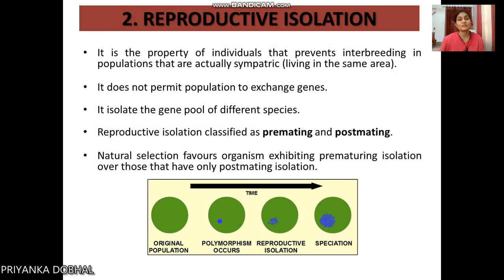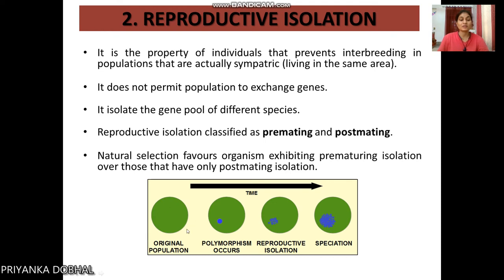Now let's talk about reproductive isolation. Here, individuals that are different within a population do not exchange genes, and their gene pool also becomes different. In the diagram, we are showing the original population in green color.